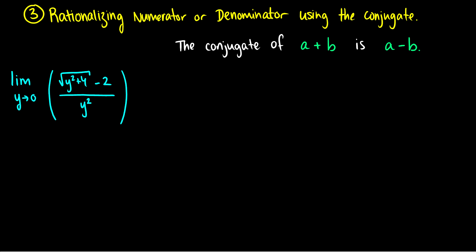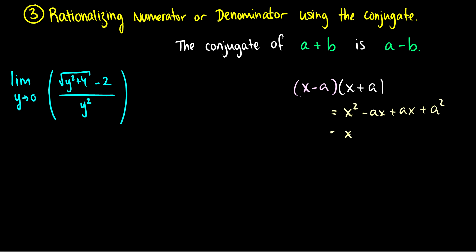When we take x minus a and multiply by the conjugate x plus a, we end up with x squared minus ax plus ax — sorry, this should be minus a squared — so we get x squared minus a squared. So if we take a look at our expression, square root of y squared plus 4 minus 2 over y squared, this term is a square root. If I multiply by the conjugate, I'll be able to square it, and that means I can cancel out that y squared on the bottom.